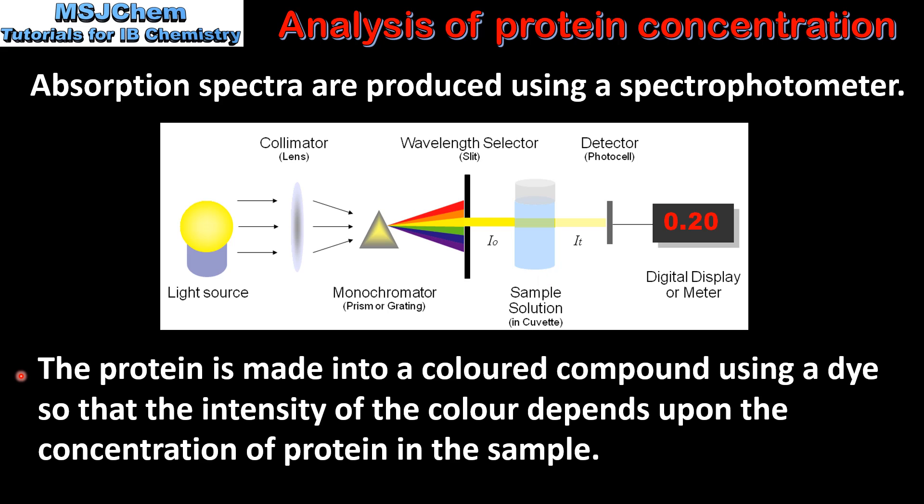Before analyzing with a spectrophotometer, the protein is made into a colored compound using a dye so that the intensity of the color depends upon the concentration of protein in the sample.